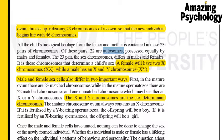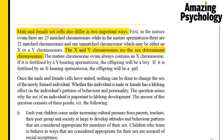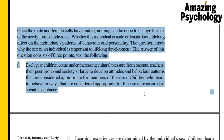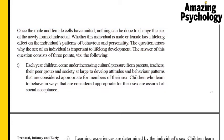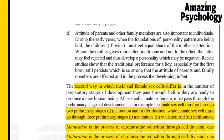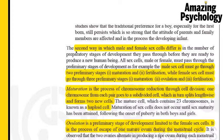The X and Y chromosomes are the sex determinant chromosomes. In the female there are always two X's, and in the male there's always X and Y. The sex of the child is determined by whether the sperm that penetrates the egg carries an X chromosome or a Y chromosome. The male cell goes through two stages: maturation and fertilization, whereas the female sex cell goes through three stages: maturation, ovulation, and fertilization.